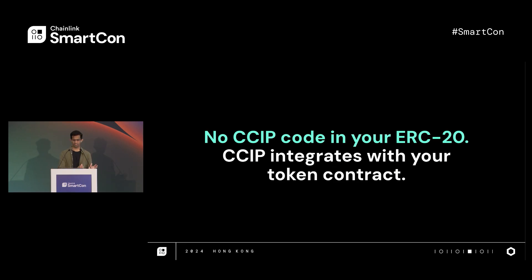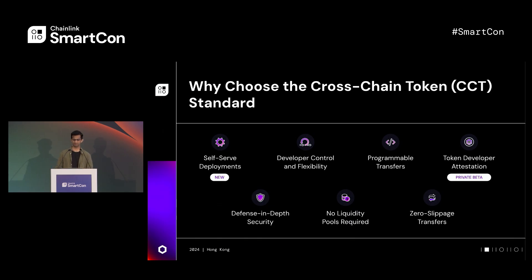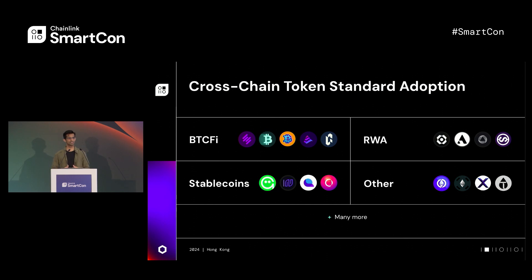We went this route rather than force developers to alter, upgrade, or lock in CCIP code directly in their ERC-20. We wanted developers to retain that flexibility while still getting access to all of CCIP's great functionality, including programmable token transfers, token pool rate limits, token developer attestations, and more in the future. By leveraging cross-chain tokens, developers will get access to all these features, and as we continue to add more, developers will continue to benefit. We really think this is a great choice for developers looking to create new tokens that are cross-chain or take existing tokens cross-chain.